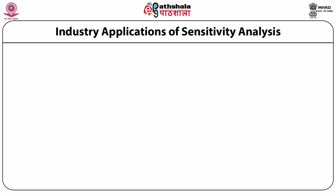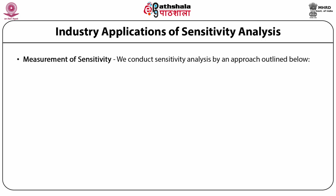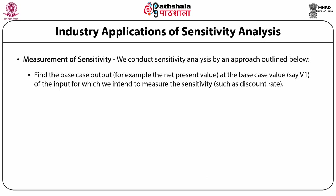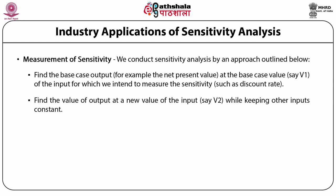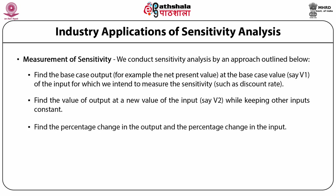Industry applications of sensitivity analysis: We conduct sensitivity analysis using the following approach. Find the base case output — for example, the net present value — at the base case value, say v1, of the input for which we intend to measure the sensitivity, such as the discounting rate. We keep all other inputs in the model — such as the cash flow growth rate, tax rate, depreciation, etc. — constant. Then find the value of output at a new value of the input, say v2, while keeping the other inputs constant. Then we find the percentage change in the output and the percentage change in the input. Find sensitivity by dividing the percentage change in the output by the percentage change in the input.